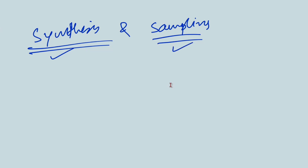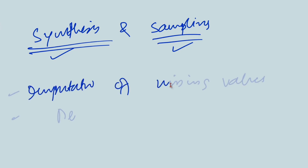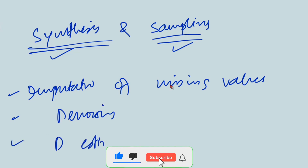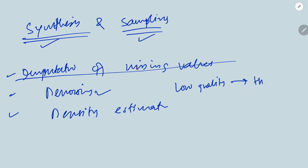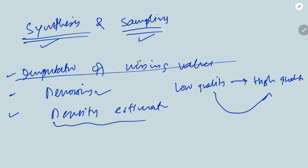Then we have imputation of missing values, then denoising, then density estimation. Imputation of missing values means we have to put some values in place of missing features. Denoising — for example, if you have a very low quality video and you want to turn it into high quality, that is also a task done by machine learning. If you have noise in audio, you have to remove it and clean the audio. So changing something of low quality into high quality is denoising. Density estimation is a little mathematical and we will cover it when we go into the mathematics.